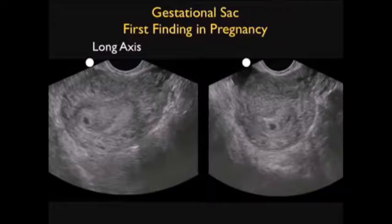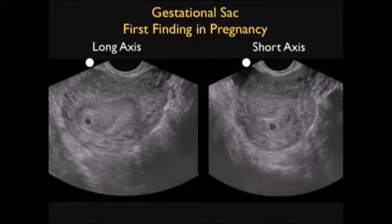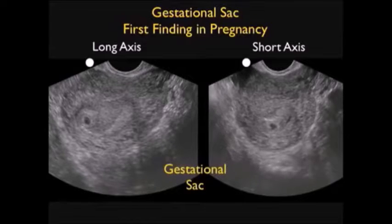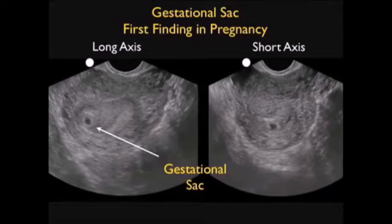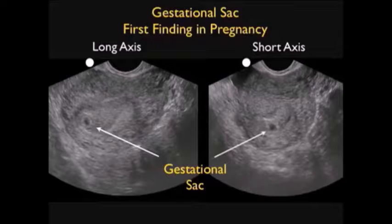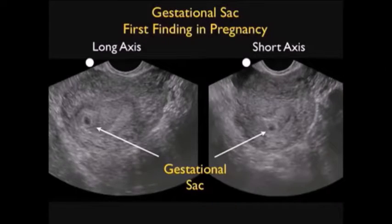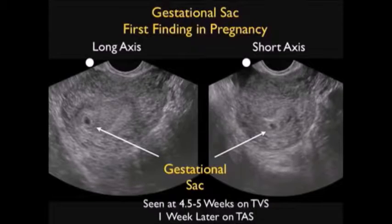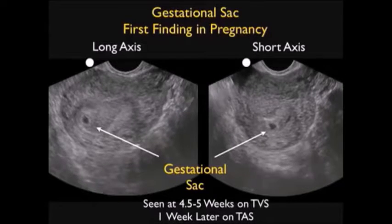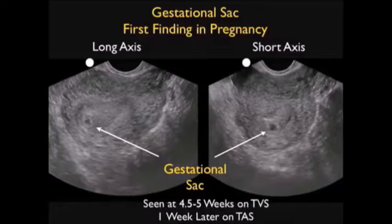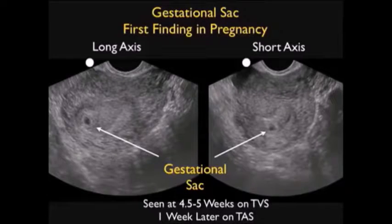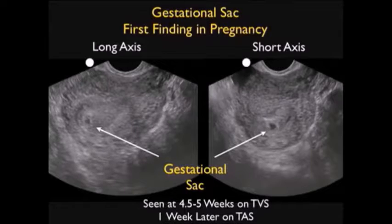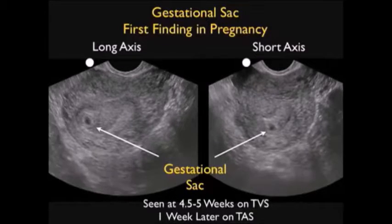Here are two video clips showing the gestational sac in long axis to the left and short axis to the right. We see a very small diameter gestational sac in both orientations. Unfortunately, this appearance can also be seen with a pseudogestational sac of ectopic pregnancy, so a small gestational sac like this is in no way diagnostic of an intrauterine pregnancy. Remember, the gestational sac is seen at about 4.5 to 5 weeks on transvaginal sonography and about a week later on transabdominal sonography.